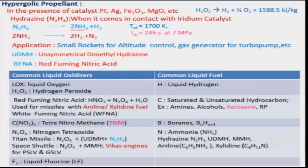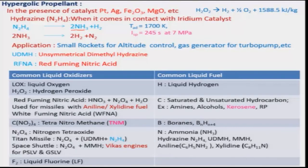Boron hydride has good qualities but is not really being used as a fuel. Nitrogen tetroxide is purposely being used — it has been used in the Titan missile with a mixture of UDMH and hydrazine. In the space shuttle context, nitrogen tetroxide is used as oxidizer and MMH as a fuel in the Vikas engine for PSLV and GSLV.